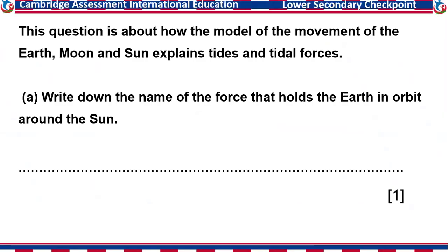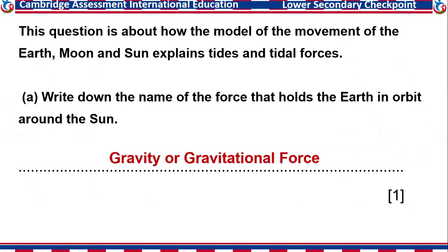This question is about how the model of the movement of the Earth, Moon, and Sun explain tides and tidal forces. Write down the name of the force that holds the Earth in orbit around the Sun. We already know that gravity, or gravitational force, is responsible — it is the force that holds the planets in orbit as they revolve around the Sun. So the answer is gravitational force, or simply gravity.